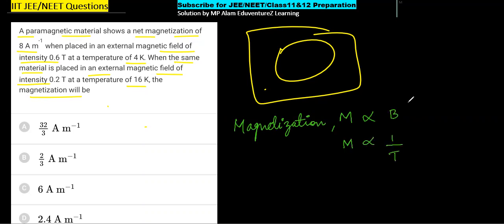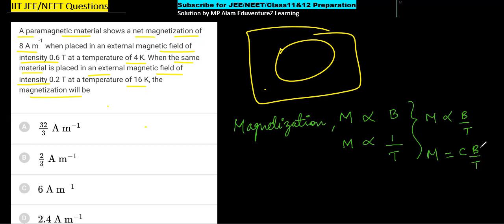जब इन दोनों equations को मिलाएंगे तो यह हो जाएगा B upon T। और जब proportionality sign को हटाएंगे तो एक constant आएगा — M = CB/T। यहाँ M magnetization है, C Curie constant है, B magnetic field है, और T absolute temperature है। इसको Curie's Law कहते हैं।